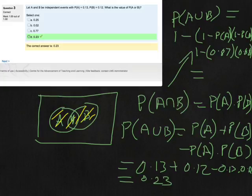And that's going to be equal to 1 minus 0.87 times 0.88, 0.2344, exactly the same.